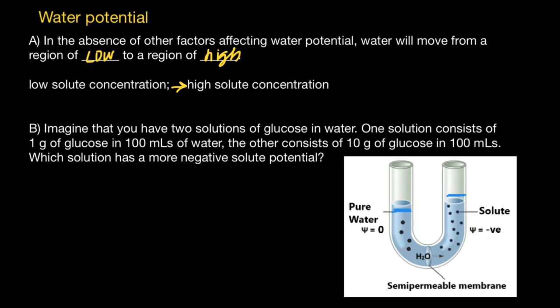Water potential of one gram glucose in 100 milliliters would be negative. But 10 grams in 100 milliliters solution, water potential would be even more negative. And this means that water molecules still would go from left part to the right part, because water potential here is going to be higher.